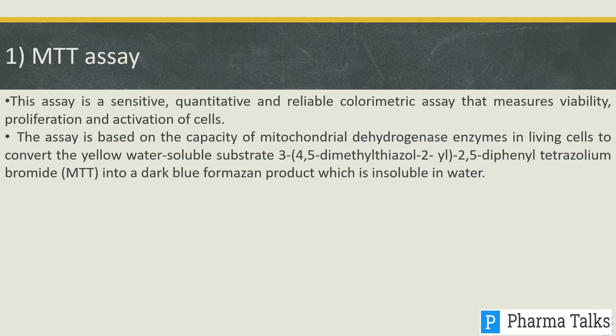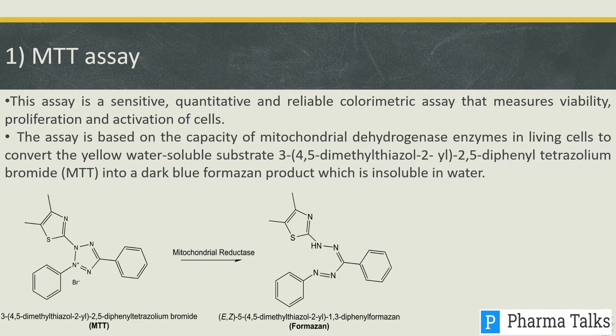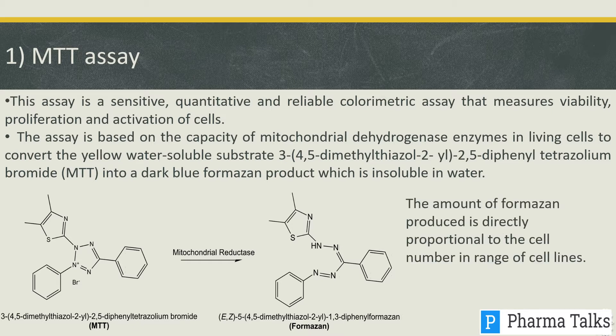The MTT assay is a sensitive, quantitative, and reliable colorimetric assay that measures viability, proliferation, and activation of cells. It is based on the capacity of mitochondrial dehydrogenase enzymes in living cells to convert the yellow water-soluble substrate MTT into a dark blue formazan product which is insoluble in water. The amount of formazan produced is directly proportional to the cell number.